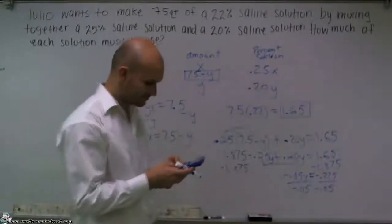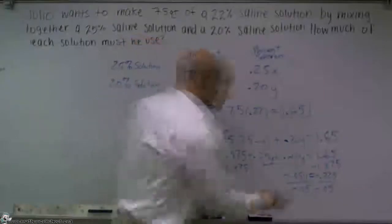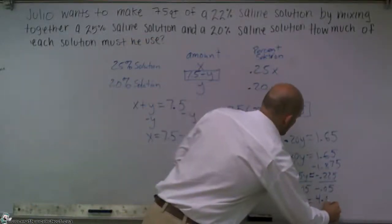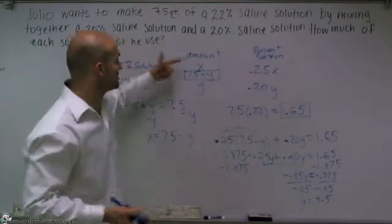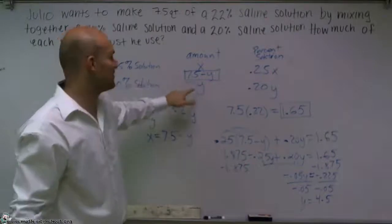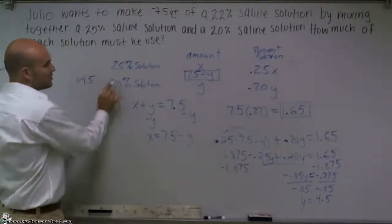And what I get is y equals 4.5. So therefore, the amount of solution for my y is going to be 4.5. So I'm going to use 4.5 of my 20% solution.